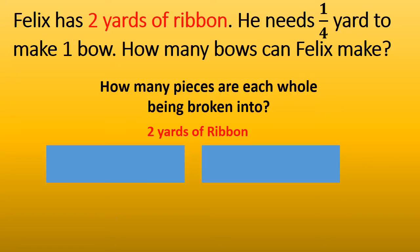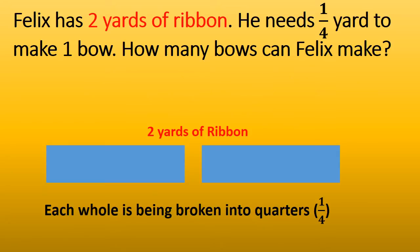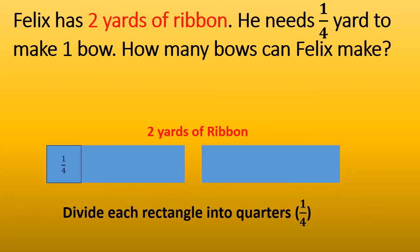Now we need to determine how many pieces each whole is going to be broken into. The problem says he needs one quarter yard to make one bow, so we are going to break each yard up into quarter yards. Now we are going to divide the rectangle into quarters.